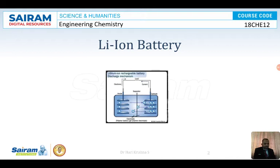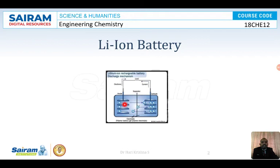Both lithium cobalt oxide and graphite are layered solids that can accommodate metals and their ions in between their layers. This is very clearly shown in the diagram here. Because they are layered solids, the anode (lithium cobalt oxide) and the cathode (graphite) can both accommodate ions within their layers.